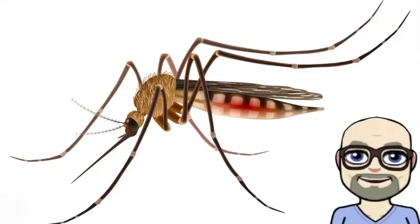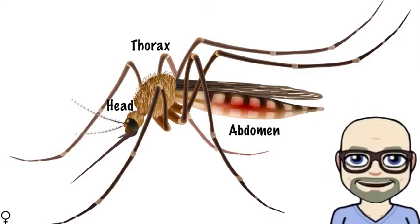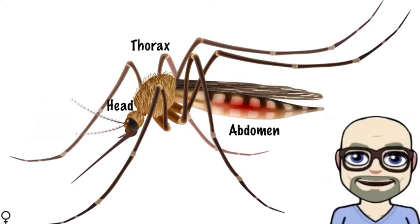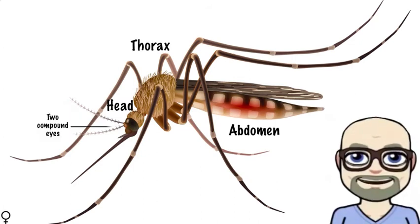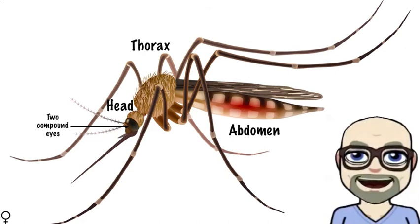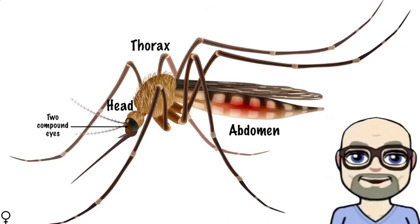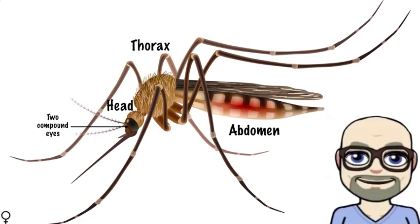A closer look at the mosquito reveals a head, thorax, and abdomen, which make up a three-segmented body. The head is rounded and contains a pair of compound eyes. Contained within the compound eyes are hundreds to thousands of ommatidia, or small lenses. Compound eyes assist in the pursuit of a host blood meal.